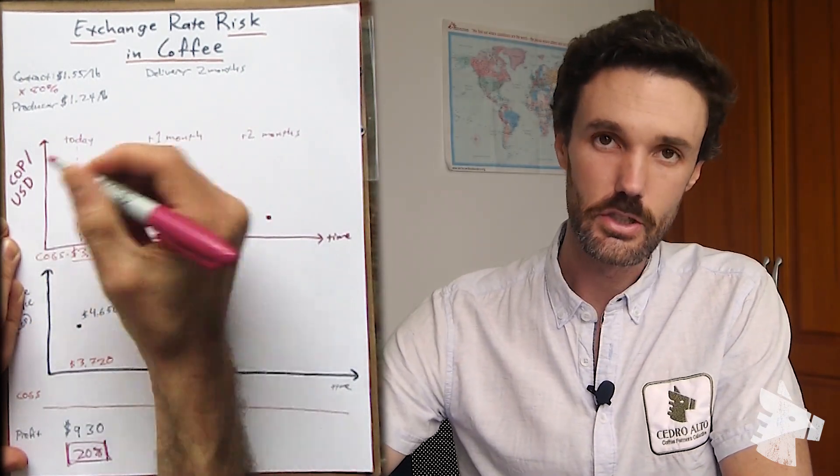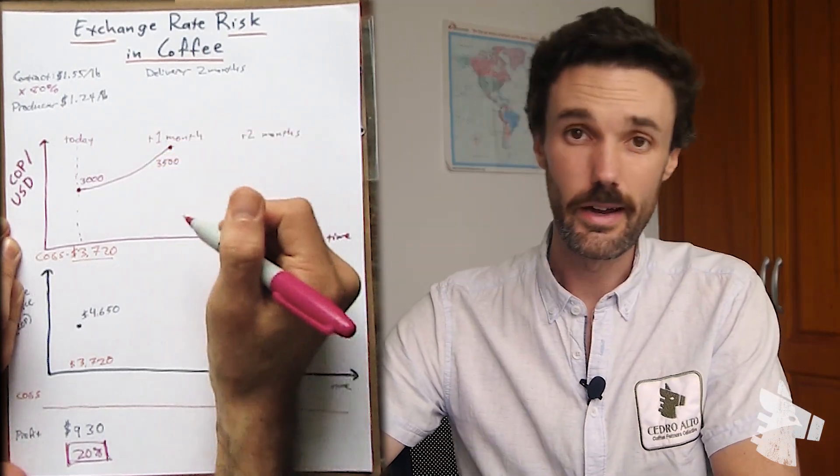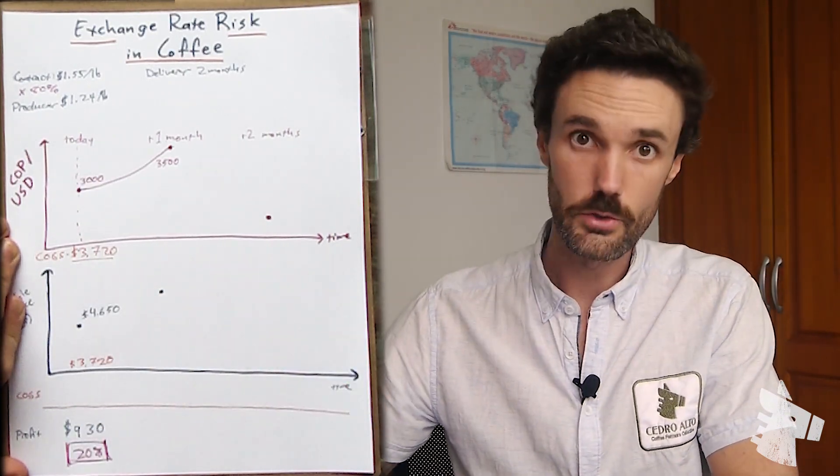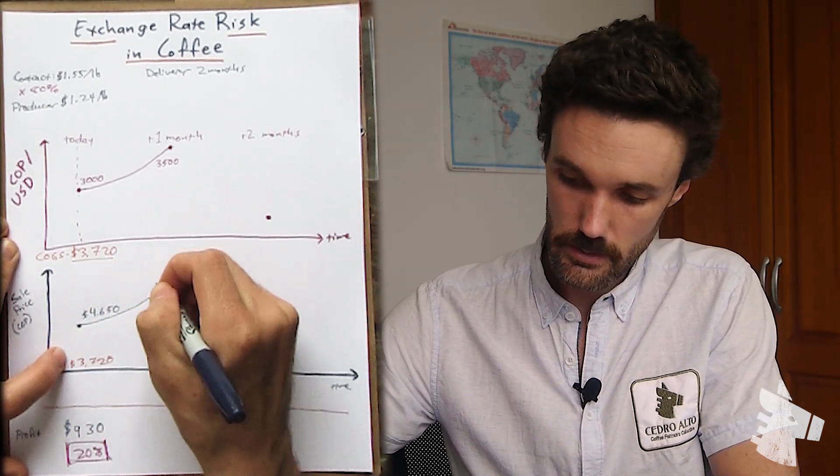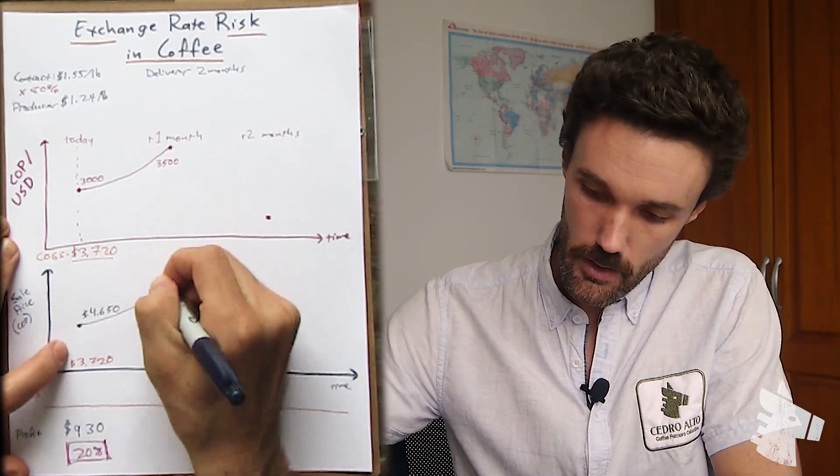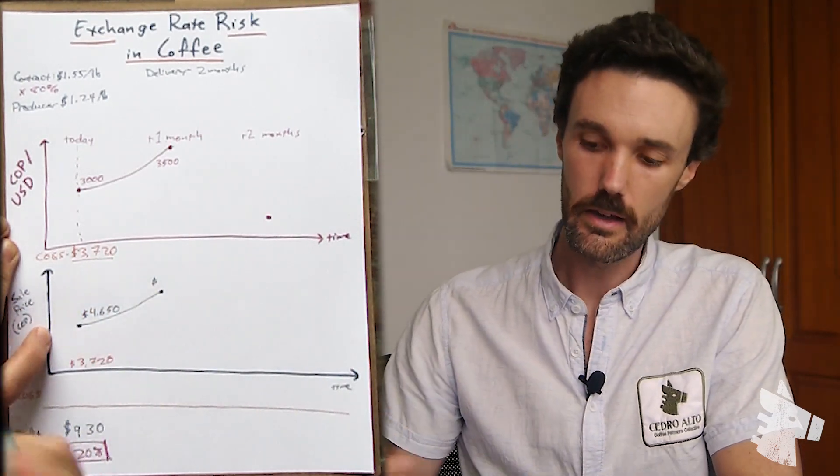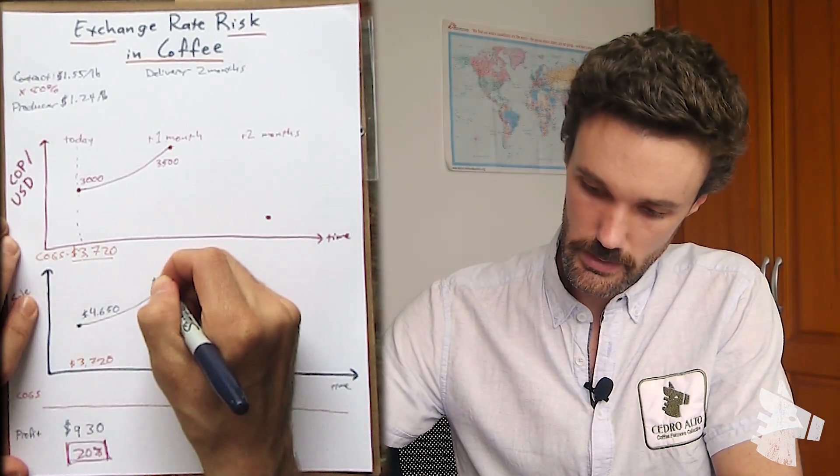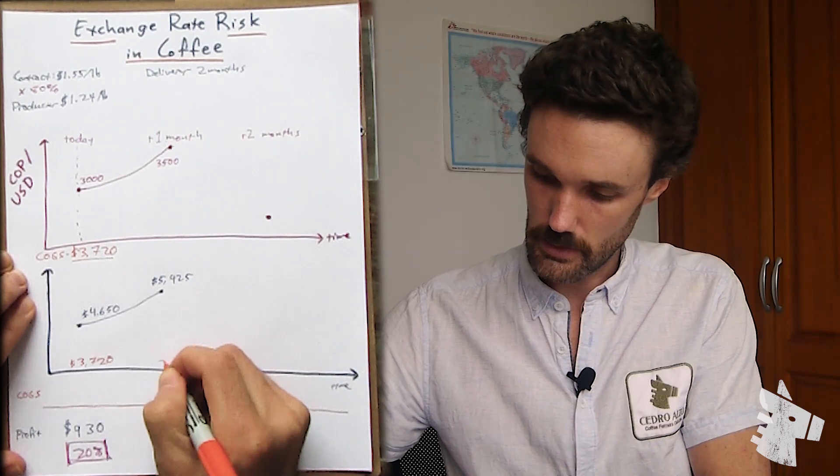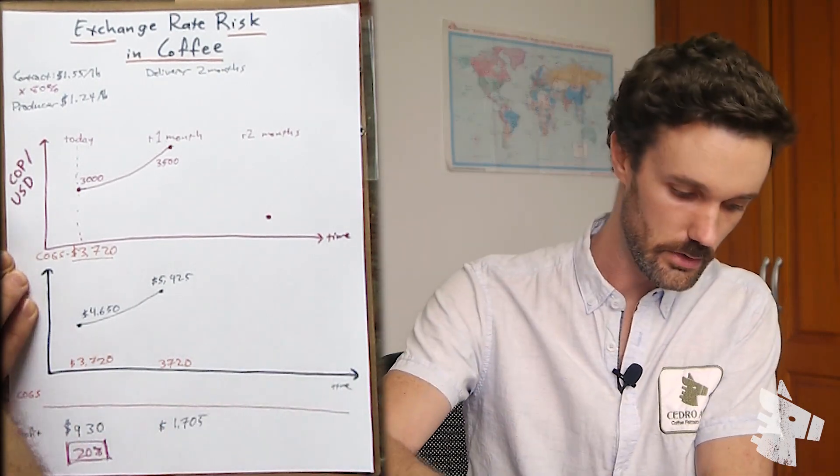A month goes by because the exchange rate is changing every single day. Let's say the peso depreciates. It goes to 3,500 Colombian pesos per US dollar. Now, in this case, our sale price in Colombian pesos would also rise because our sale price is in US dollars. So if the Colombian peso depreciates, that means for those US dollars, when we do bring them into Colombia and sell them for Colombian pesos, we can sell them for more. So even though our cost of goods sold is still 3,720 pesos because we already spent that money, that parchment is already ours, what we're selling it for is now worth 5,425 pesos. Because our cost of goods is still 3,720, our profit is going to be 1,705 pesos per pound green coffee.